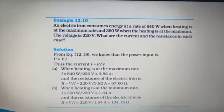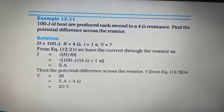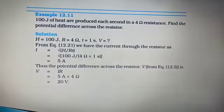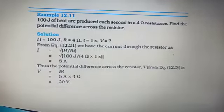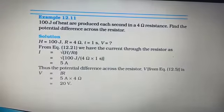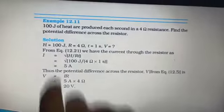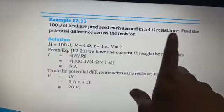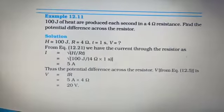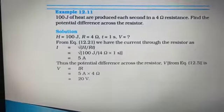Moving ahead to the next sum. Example 12.11. 100 joules of heat are produced each second in a 4 ohm resistance. Find the potential difference across the resistor. 100 joules of heat, heat is given, R is given and they are asking you for V. Which formula is connecting H, V and R?